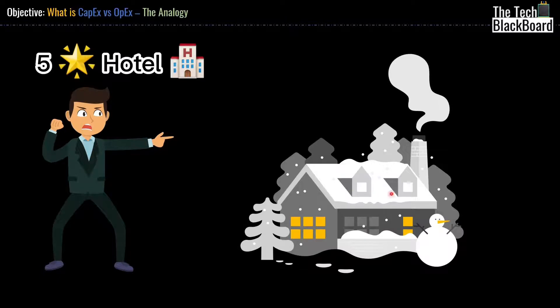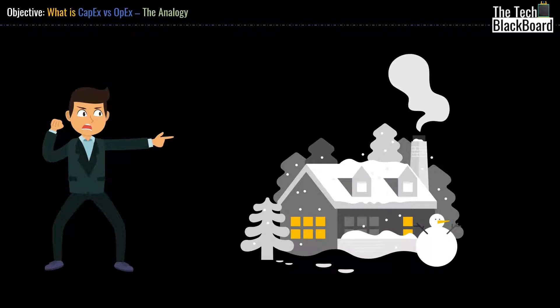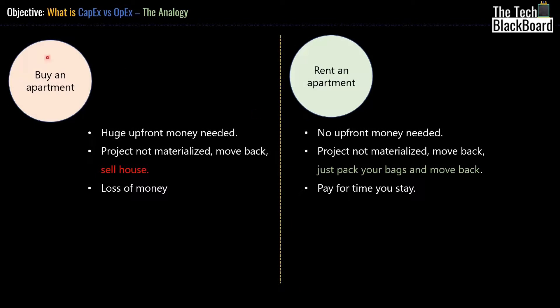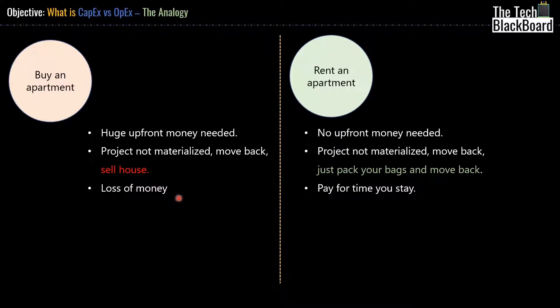Staying in a very lavish hotel might be too costly, so Mr. Tech decides to go for an apartment. He has two choices: either he buys an apartment or rents one. To buy an apartment he would need a huge upfront sum of money. Additionally, if he unfortunately loses the sales deal, he has to sell the apartment to recover his money — possibly at a lower price. This is a huge loss of money, effort, and time.